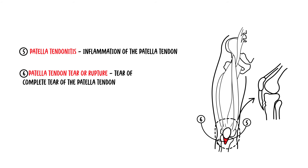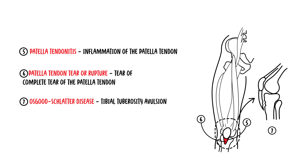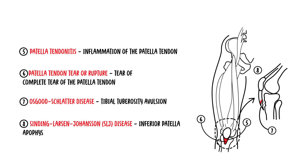Other pathologies include Osgood-Schlatter disease, which is where you have tibial tuberosity avulsion, and Sinding-Larsen-Johanssen disease, where you have inferior patella apophysis avulsion.